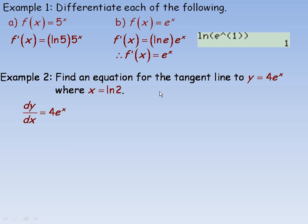In example two, we're asked to find the equation for the tangent line to y equals 4e to the x where x is equal to ln of 2. So we're going to differentiate. So the derivative of 4e to the x would be 4 times the derivative of e to the x, which is, of course, just e to the x. So the derivative actually is the original function.